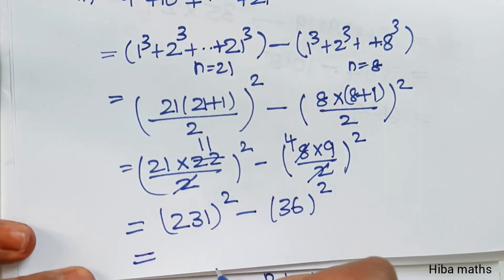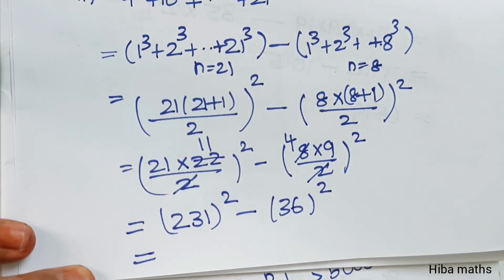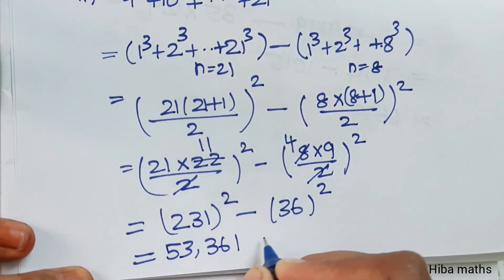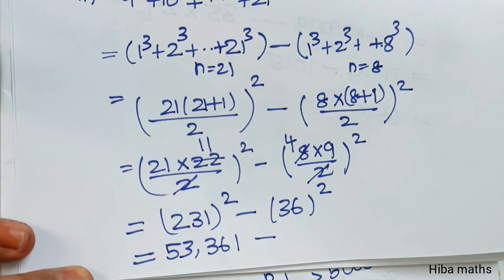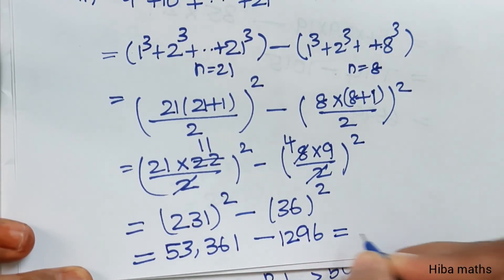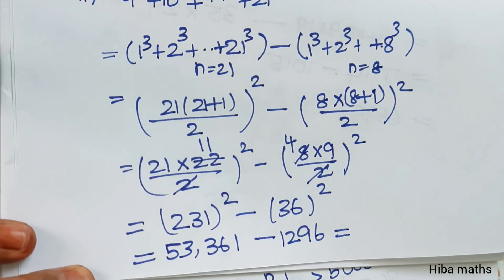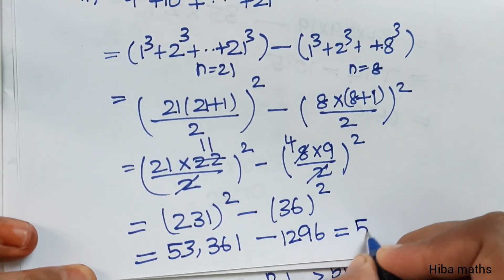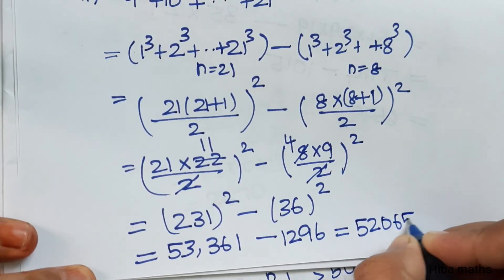Solving 231 into 231 gives 53,361. Minus 36 into 36, that is 1,296. So 53,361 minus 1,296 gives us 52,065.